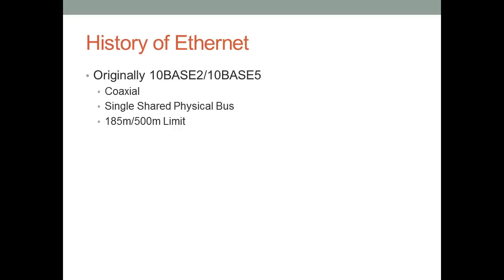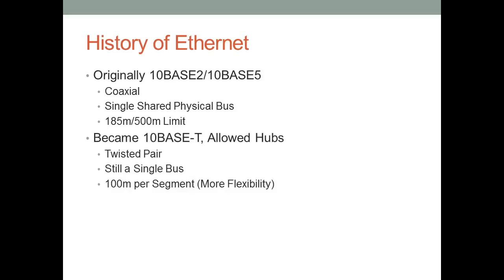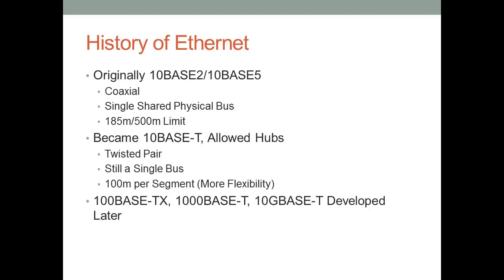Eventually, as technology developed, 10BaseT used twisted pair cables instead of a single shared coaxial bus. However, by using hubs, they still formed a single physical bus in terms of wiring. Ethernet lowered the length limit to 100 meters, but now you could connect all computers to a central hub, allowing for a much more flexible network topology design.